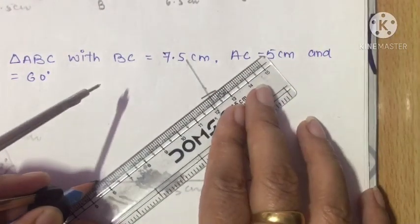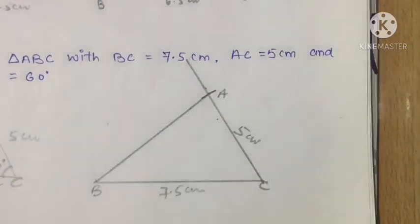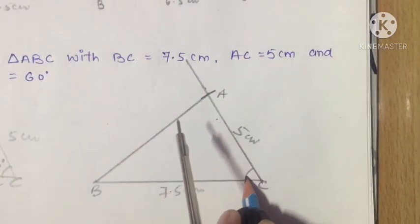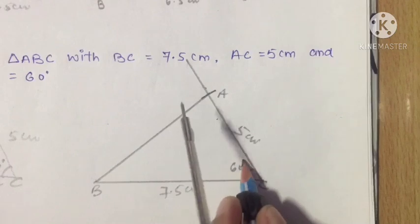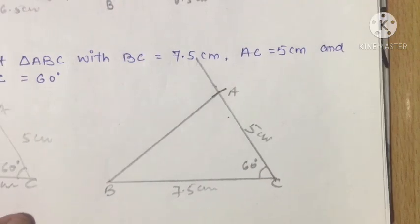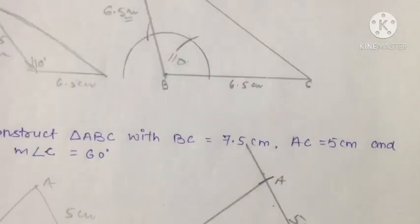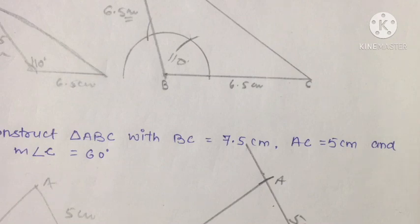Join A with B to get the required triangle. Mention that AC is 5 cm and angle C is 60 degrees. This is the required triangle. I hope that all three questions of Exercise 10.3 are clear to everyone.